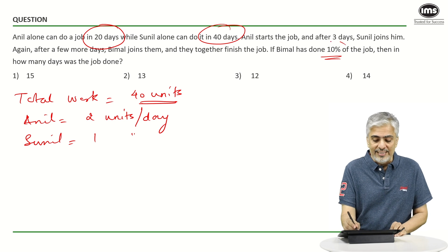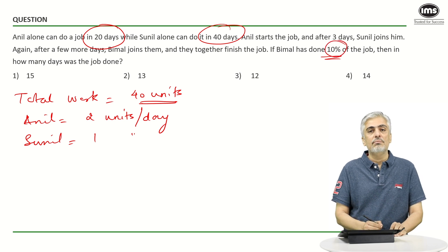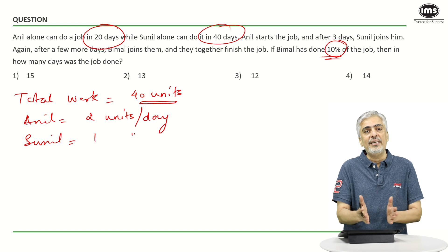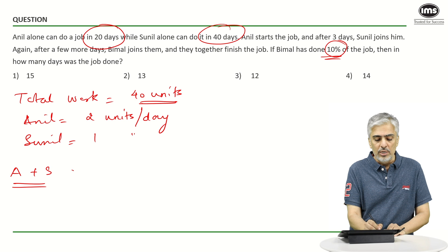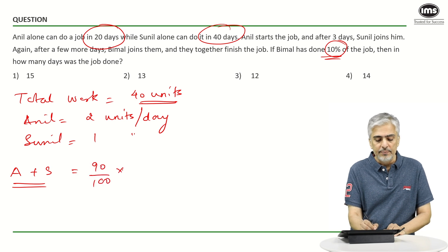See I know Bimal does 10% of the work. So which means Anil and Sunil are doing the remaining 90% of the work. So work done by Anil plus Sunil, I don't know how many days I'll come back to that. Will be 90% of 40 which is 36 units.